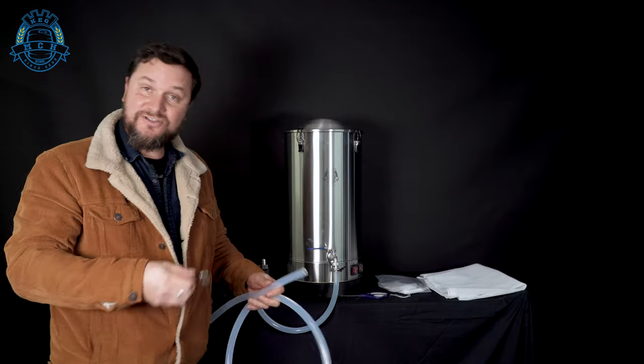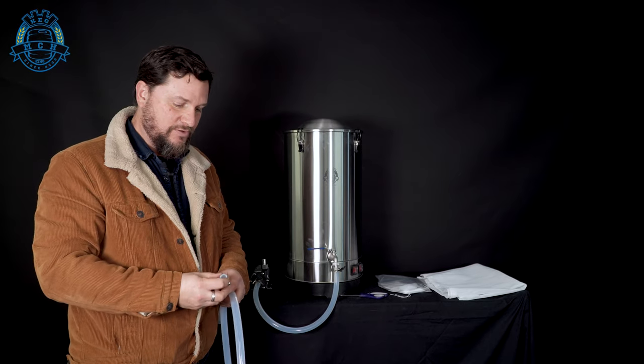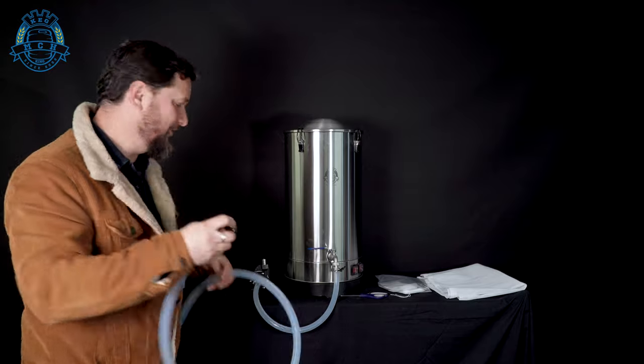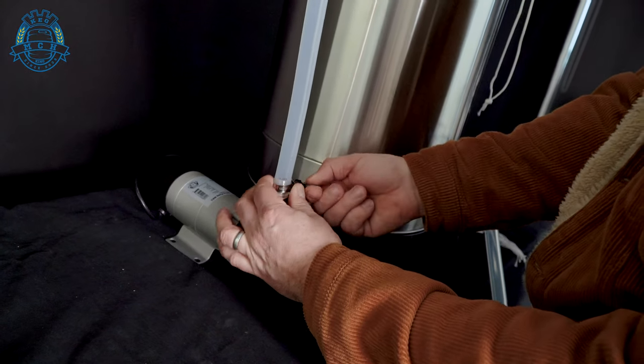So we've done the bottom line, we're just going to do the return line that's going to take the liquid back up over the top. Put your butterfly clamp onto the hose, put the hose onto the barb, and just tighten that up.